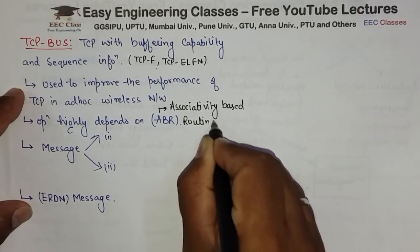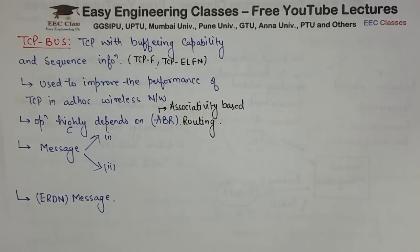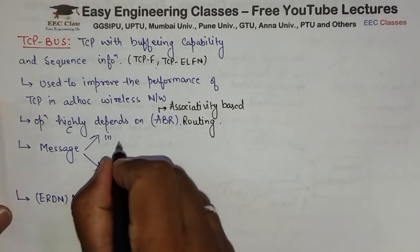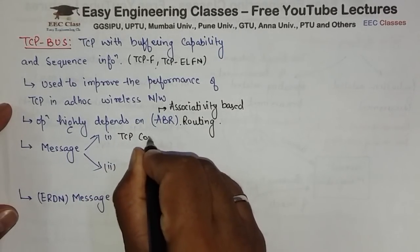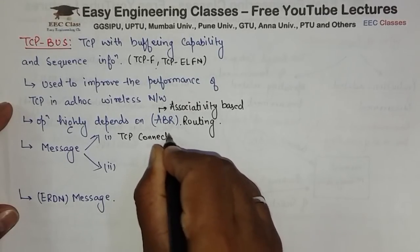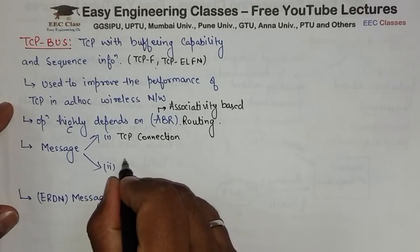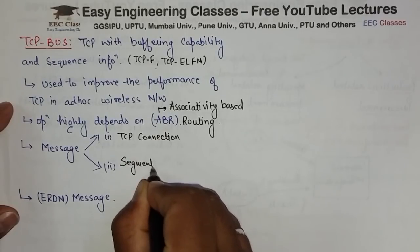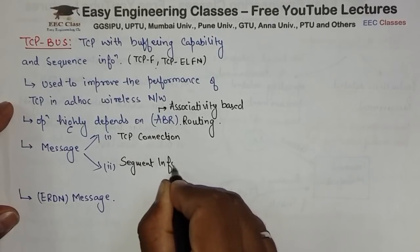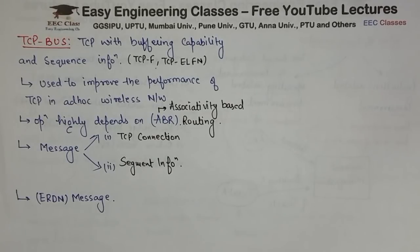Is ke upar based hai iska pura mechanism, and in this two different types of messages are basically transmitted. Ya in two different type ke messages ko carry karti hai routing protocol. Ek hota hai message about the TCP connection — ki TCP connection break hua, path break hua, ya naya TCP connection ka path bana. And second important is segment information. So basically do type ke messages: TCP connection and segment information.